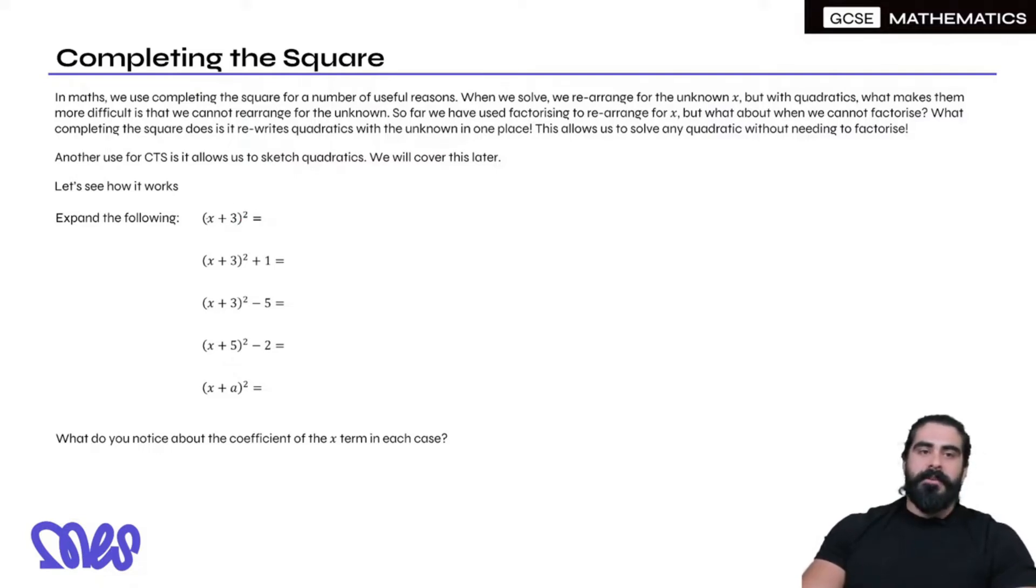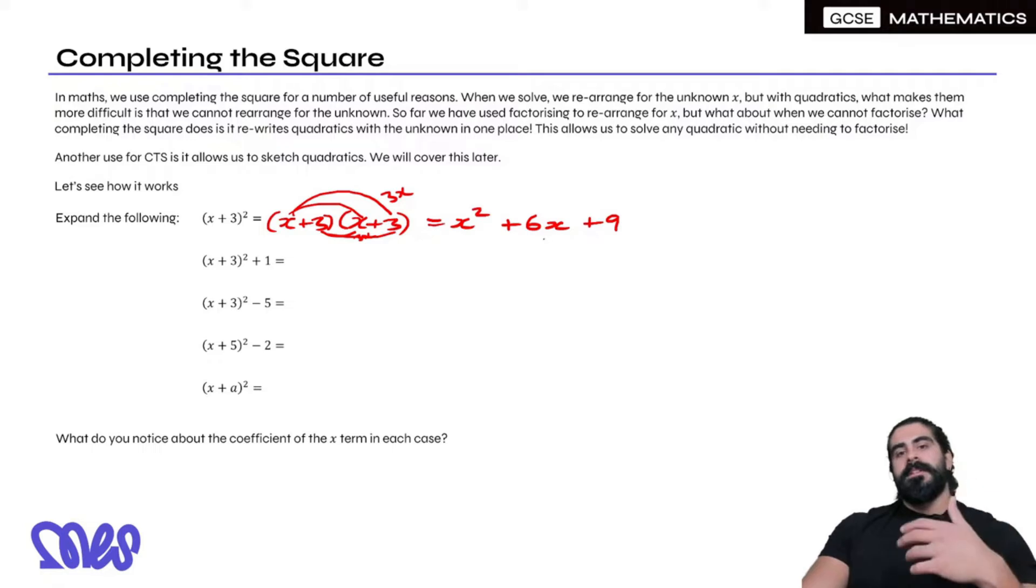Let's expand these following brackets. So (x + 3)² means write out (x + 3) twice. We have x squared, then x times 3 which is 3x, then another 3x, so 3x plus 3x is 6x. Then the final is 3 times 3 which is 9. So x² + 6x + 9 is the expansion of (x + 3)².